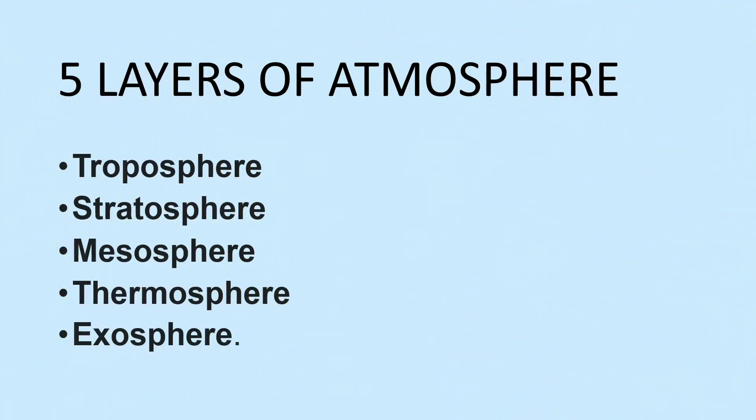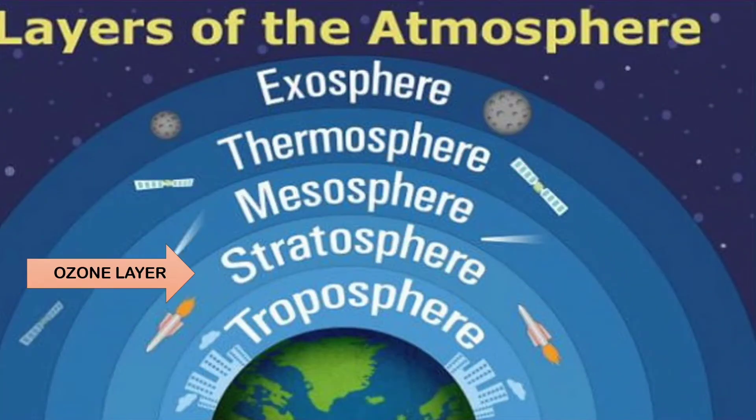Our Earth's atmosphere consists of several layers, starting from the troposphere, stratosphere, mesosphere, thermosphere, and at last the exosphere. The ozone layer is located in the layer of the stratosphere.